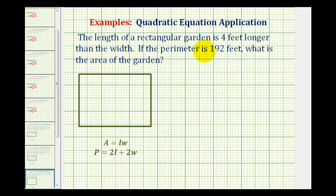The length of a rectangular garden is four feet longer than the width. If the perimeter is 192 feet, what is the area of the garden?